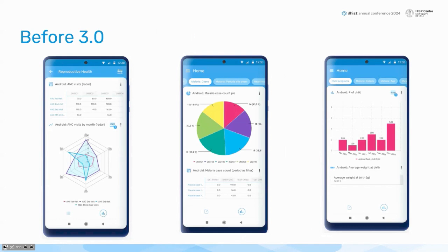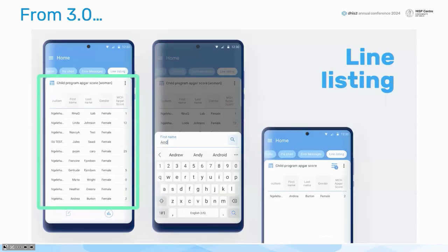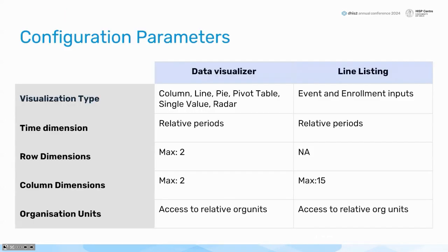Before version 3.0, there were data visualizers — analyses, data visualizers, charts, and histograms. But with version 3.0, linear lists are also available. I'll show you certain constraints we face.